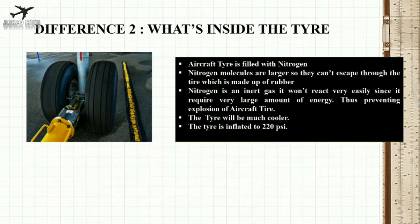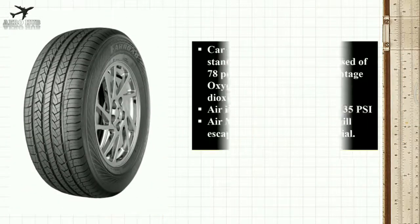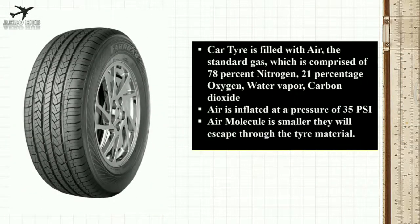The aircraft tire is inflated to 220 psi. Car tires are filled with air, the standard gas, which is comprised of 78% nitrogen, 21% oxygen, water vapor, and carbon dioxide. Air is inflated at a pressure of 35 psi. Air molecules are smaller, so they will escape through the tire.